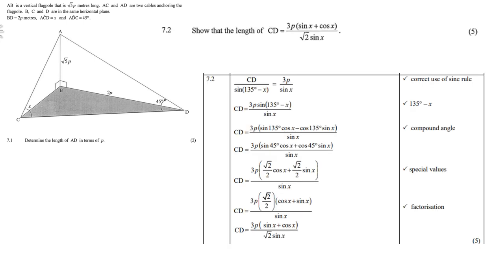You get 7.2. Show that the length of CD equals 3p times sin x plus cos x over square root of 2 over sin x. Now, there's a lot of algebra involved here, but you must first look at which triangle am I going to use. CD is part of two triangles. It's part of the gray triangle, or the one which is upright. You're going to use the one which is upright. That triangle is not right angular. I'm referring to triangle ACD.